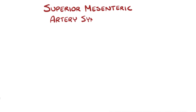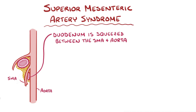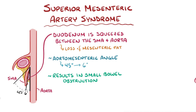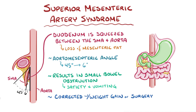As a quick recap: superior mesenteric artery syndrome is when the duodenum is squeezed between the superior mesenteric artery and the aorta, usually due to loss of surrounding mesenteric fat. This causes the aorto-mesenteric angle to go from a normal 45 degrees down to as little as 6 degrees. The result is small bowel obstruction, which can cause early satiety and vomiting, and can be corrected with weight gain, and in certain cases, surgery.